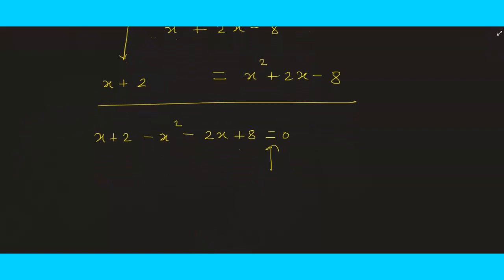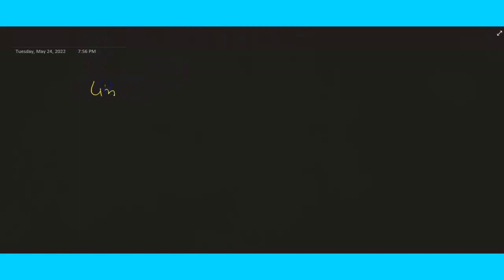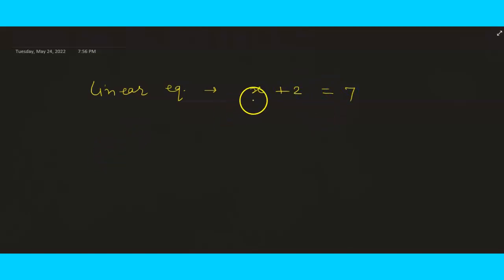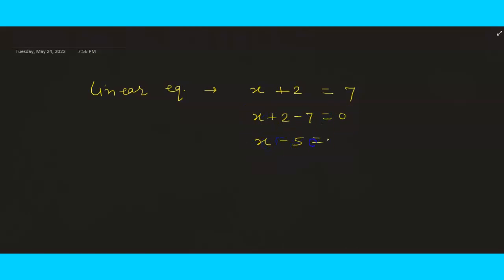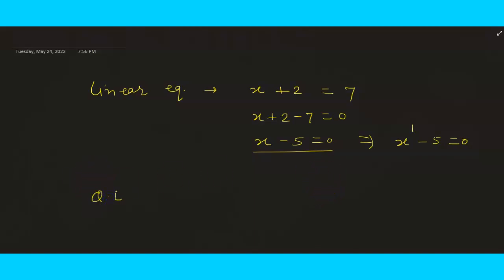There are different types of equations: linear, quadratic, cubic, and biquadratic. Starting with linear — for example, x plus 2 equals 7. Converting to standard form by transposing 7, we get x minus 5 equals 0. Here the highest power of x is 1, since x can be written as x to the power 1. So it is called a linear equation — the highest power of x is 1.